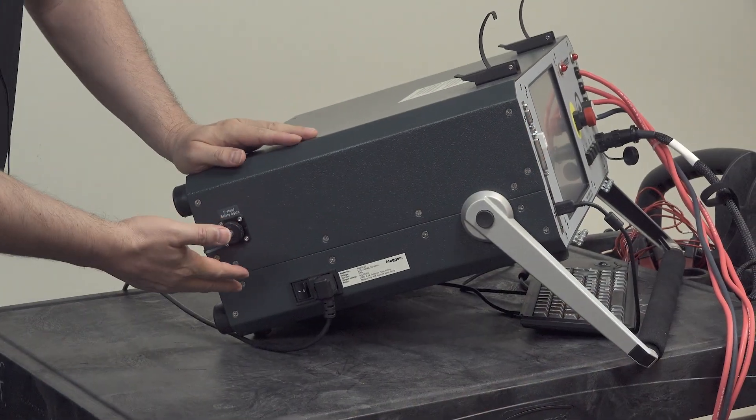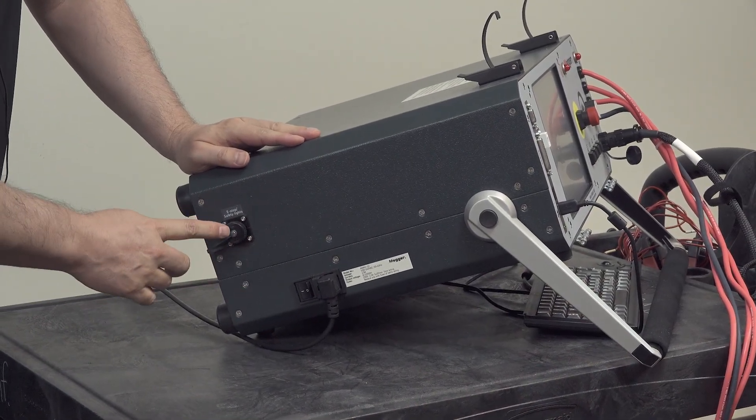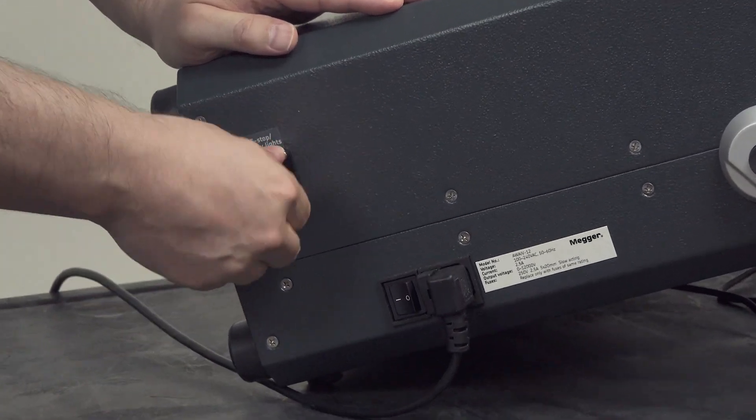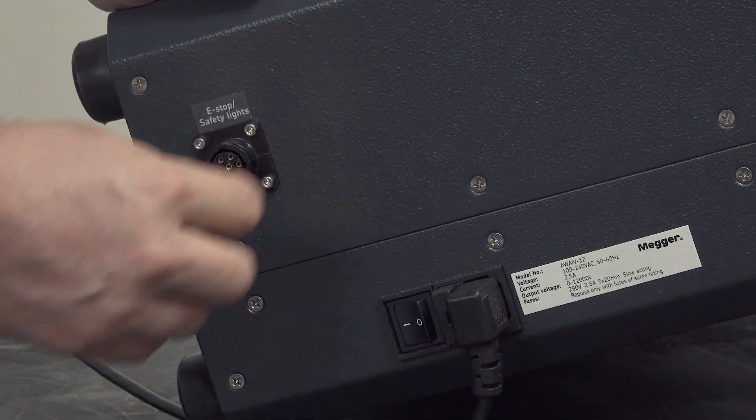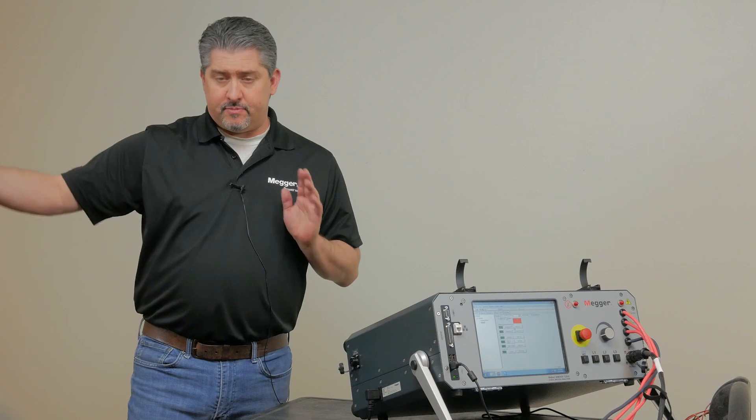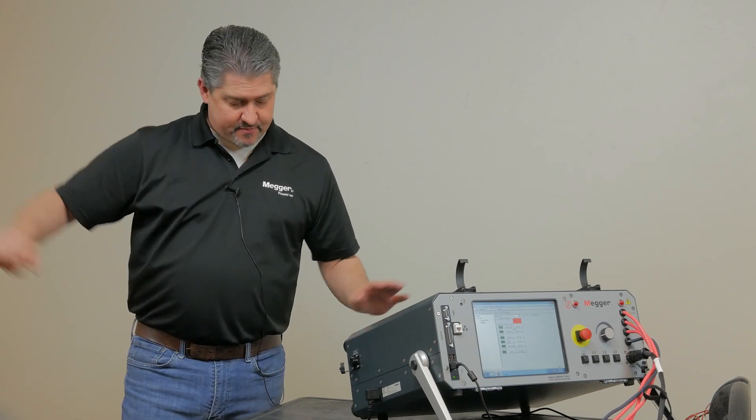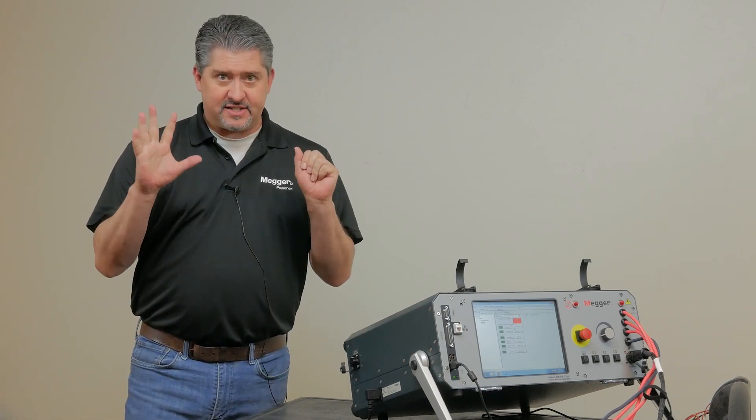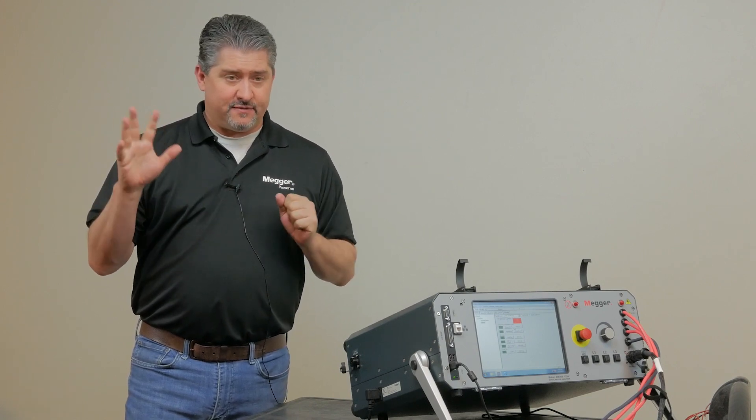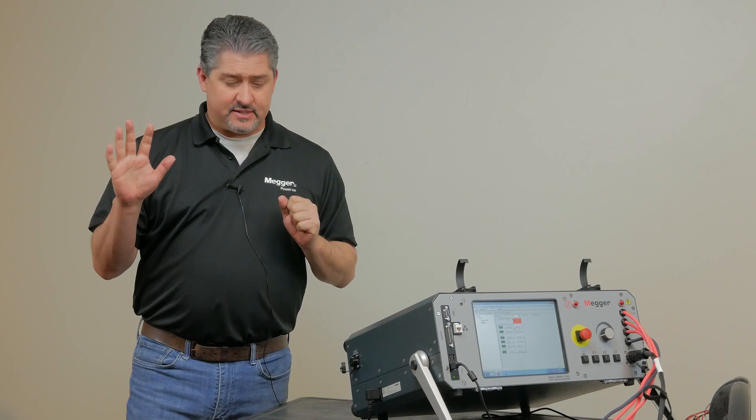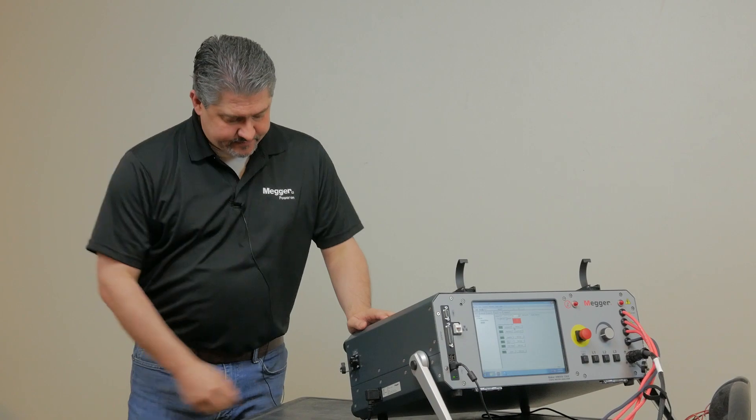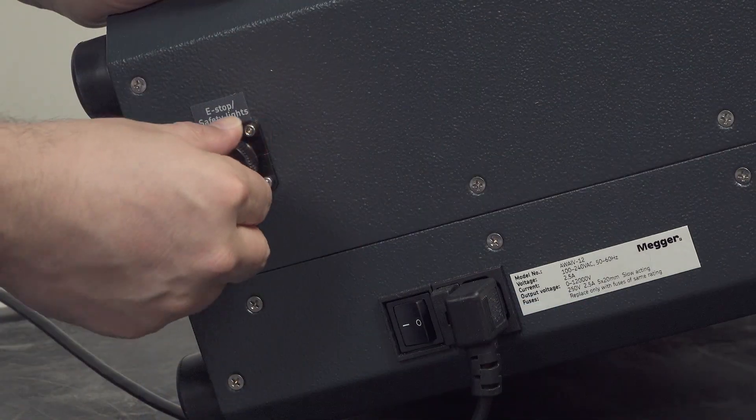On the side panel of the AWA we have a connector for a remote e-stop and safety light. Here we could connect an optional accessory that allows for an e-stop away from the tester, as well as very obvious safety lights that let everyone around know that you're performing testing. Flashing red light for high voltage leads energized and a solid green light for testing secured.